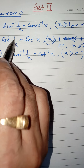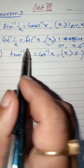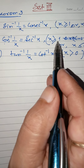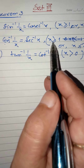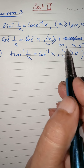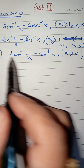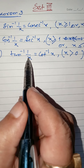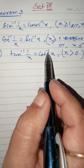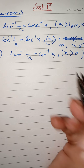Similarly, cos inverse of 1 by x is sec inverse x, where x is a real number with x greater than or equal to 1 or x less than or equal to minus 1. And tan inverse of 1 by x is also equal to cot inverse x, where x is greater than 0.